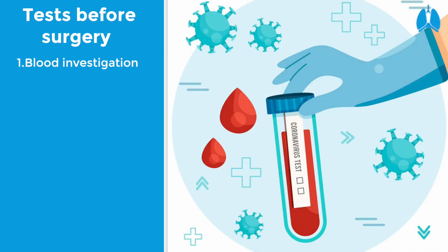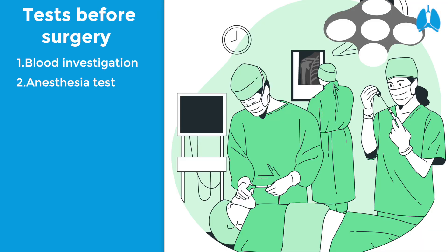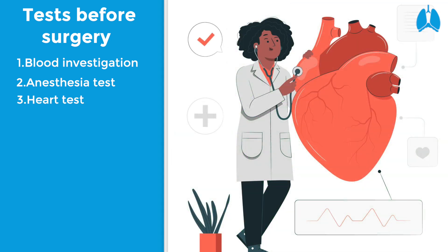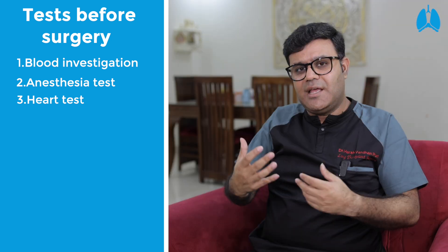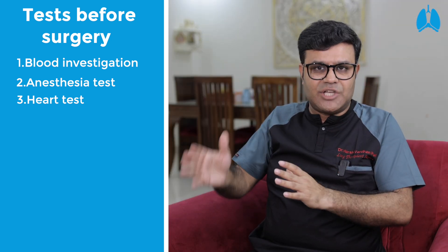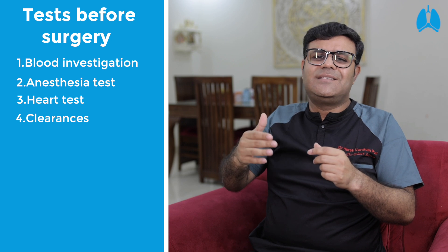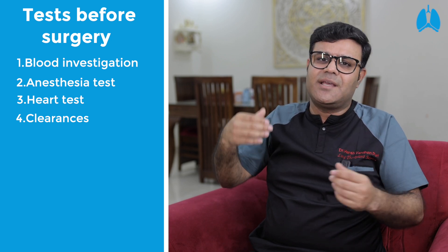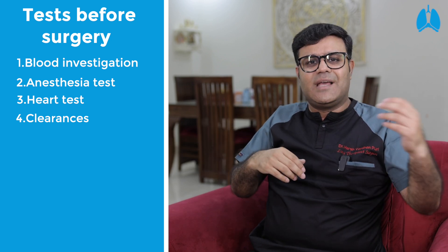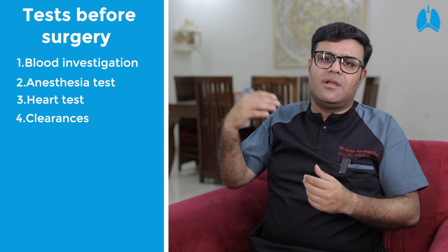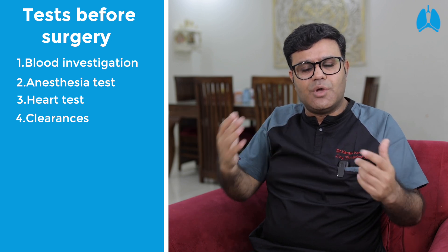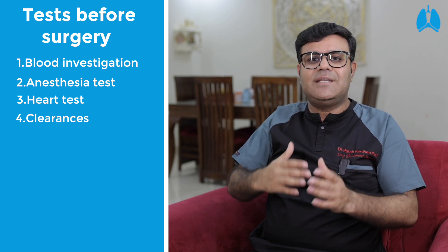The first process is that the patient can be tested on an outpatient basis. There are blood-based investigations and anesthesia clearance. For cases of myasthenia gravis, neurology clearance is taken. For cancer, medical oncology clearance is taken. All these clearances take about 3 to 4 days.